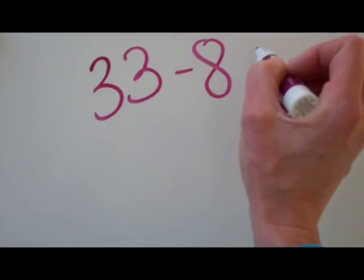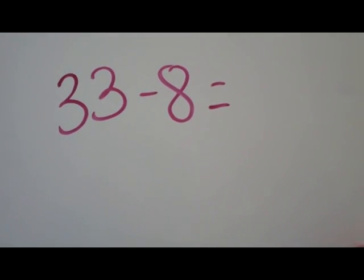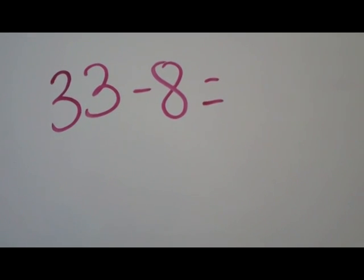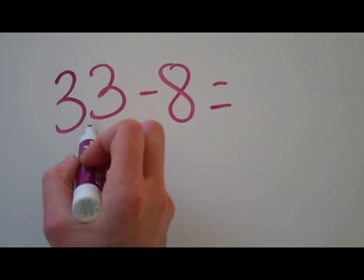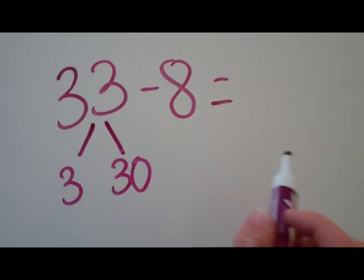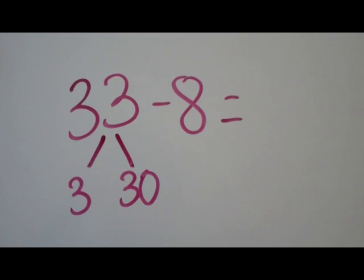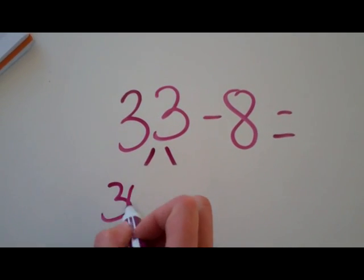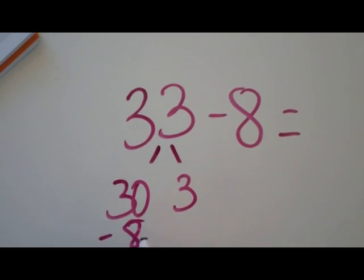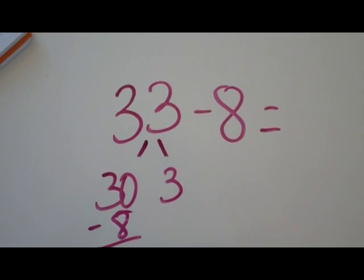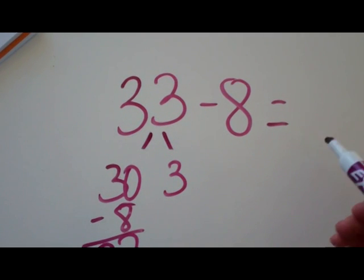33 minus 8. We're also going to look at regrouping in this chapter for subtraction. So you've got 33 minus 8 and the mental strategy for doing this type problem is you take this 33 and you break it up until you've got a 3 and a 30. Now you can't take the 8 from the ones, 30 and 3. You can't take your 8 from your ones but you can take it from your 30. So what you're going to have here is 22 plus 3, and it's going to be 25.